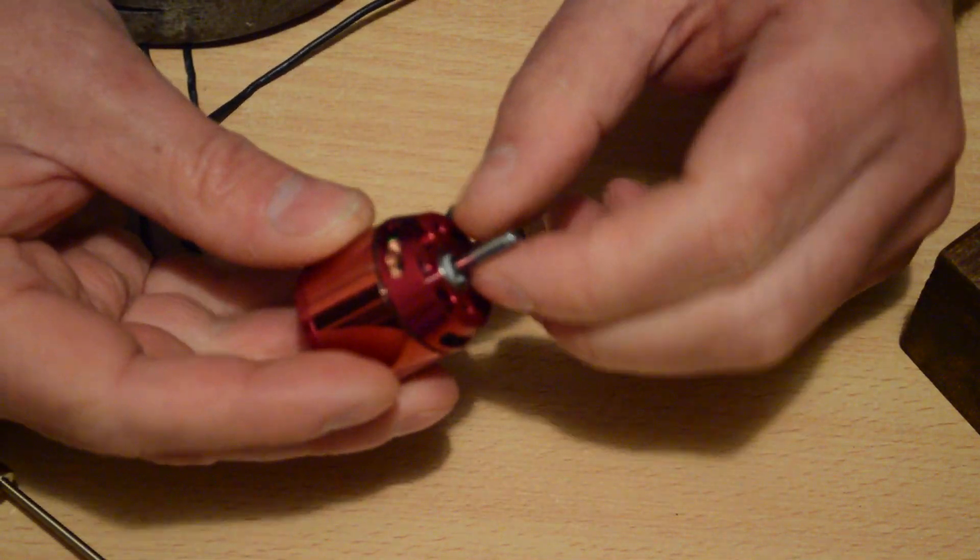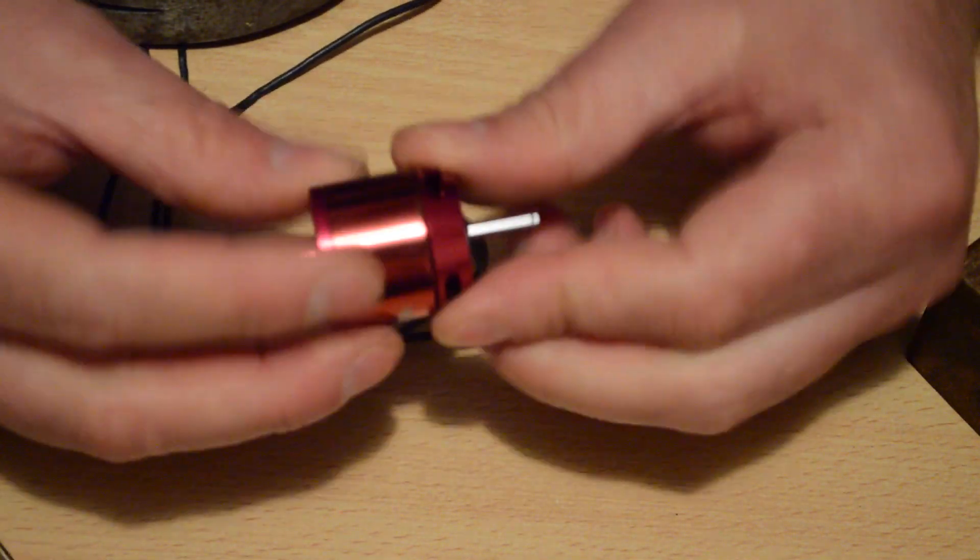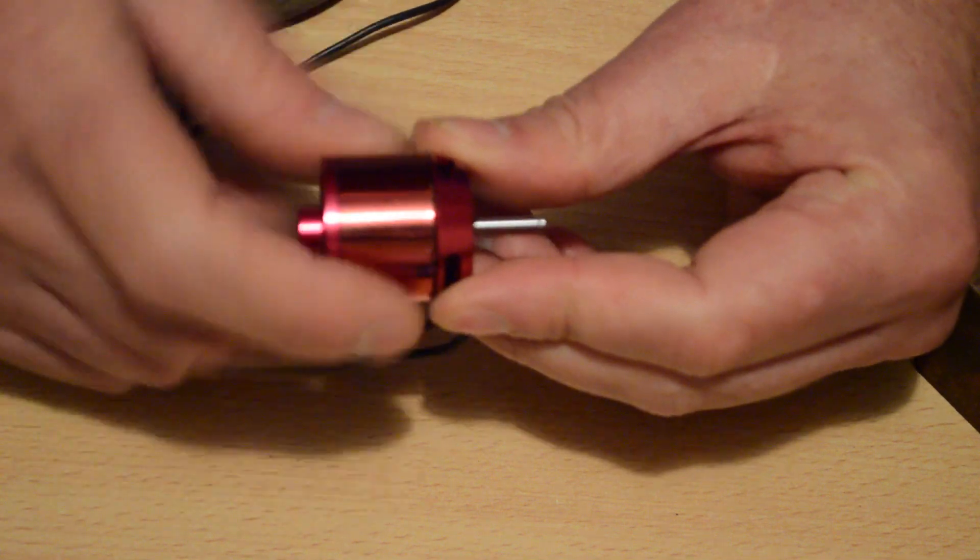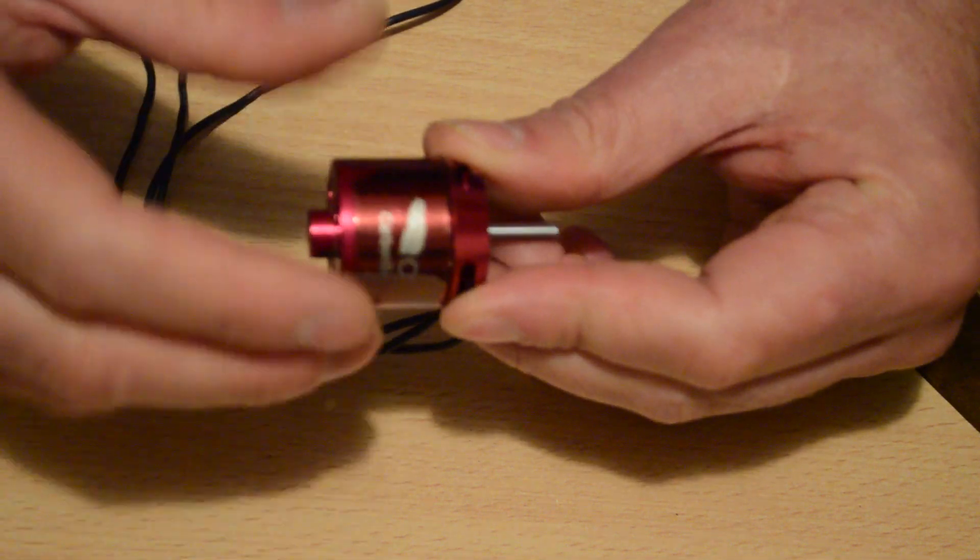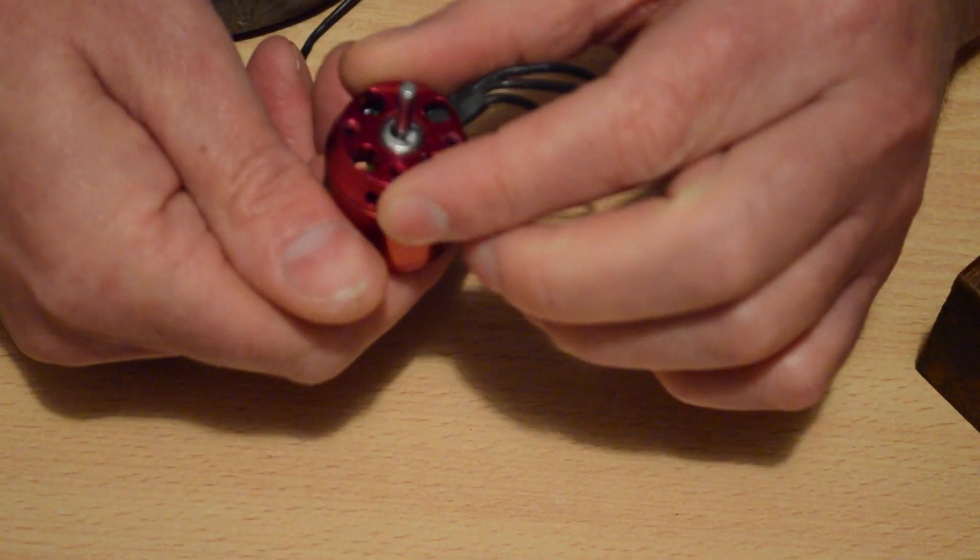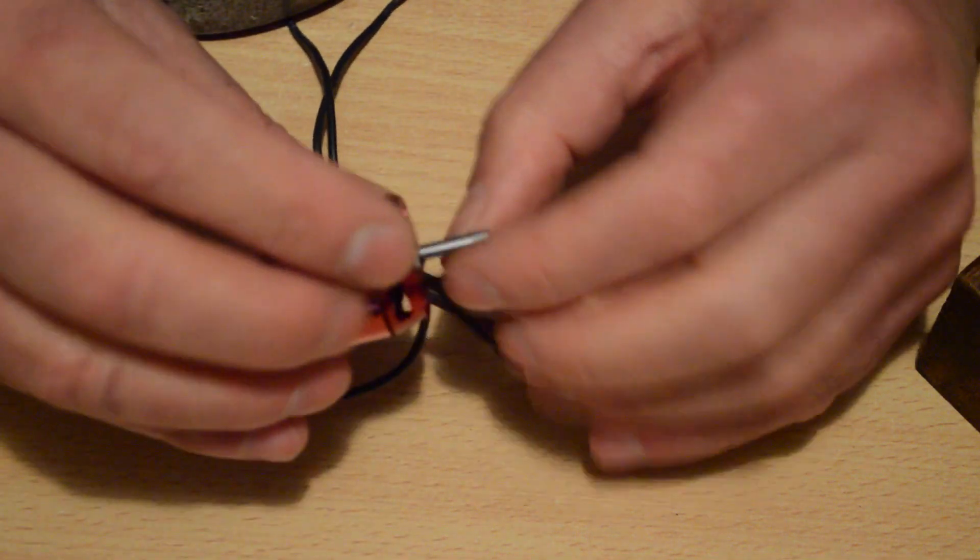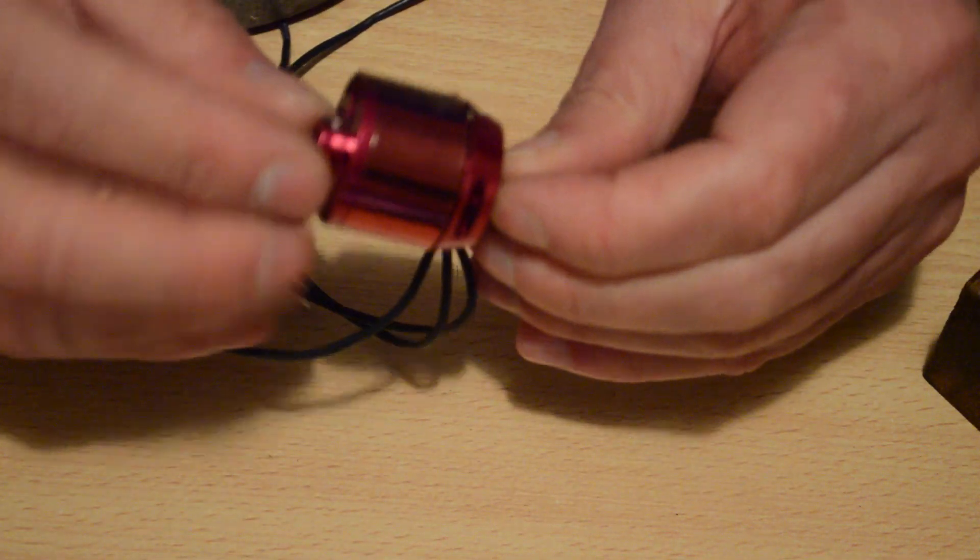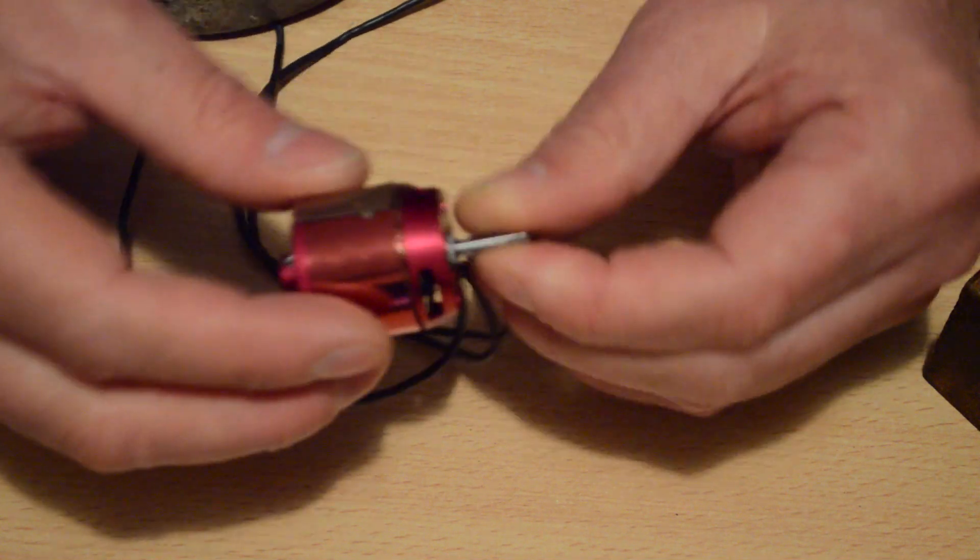So that's how I do it. That's how I get the circlips on and off, or back on more importantly. The motors back together again. And doing it that way, cheating by only partly inserting the shaft into the can.